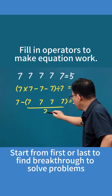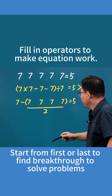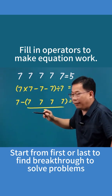7 minus what equals 5? Obviously, as long as these four sevens equal 2, it works. So how can these four sevens equal 2?